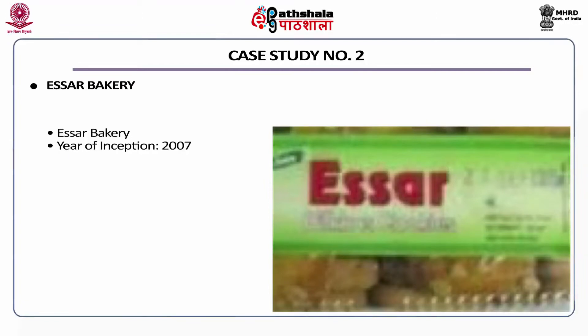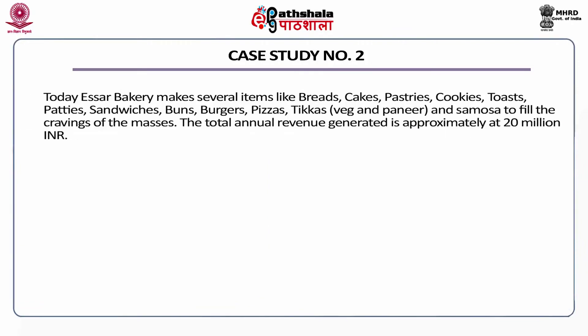Case Study No. 2: SR Bakery, Bhubaneswar, Orissa. Year of inception: 2007. Promoter: Mohanan, Chenicherry. Today SR Bakery makes several items like breads, cakes, pastries, cookies, toasts, patties, sandwiches, buns, burgers, pizzas, tikkas and samosas to fill the cravings of the masses. The total annual revenue generated is approximately 20 million rupees.